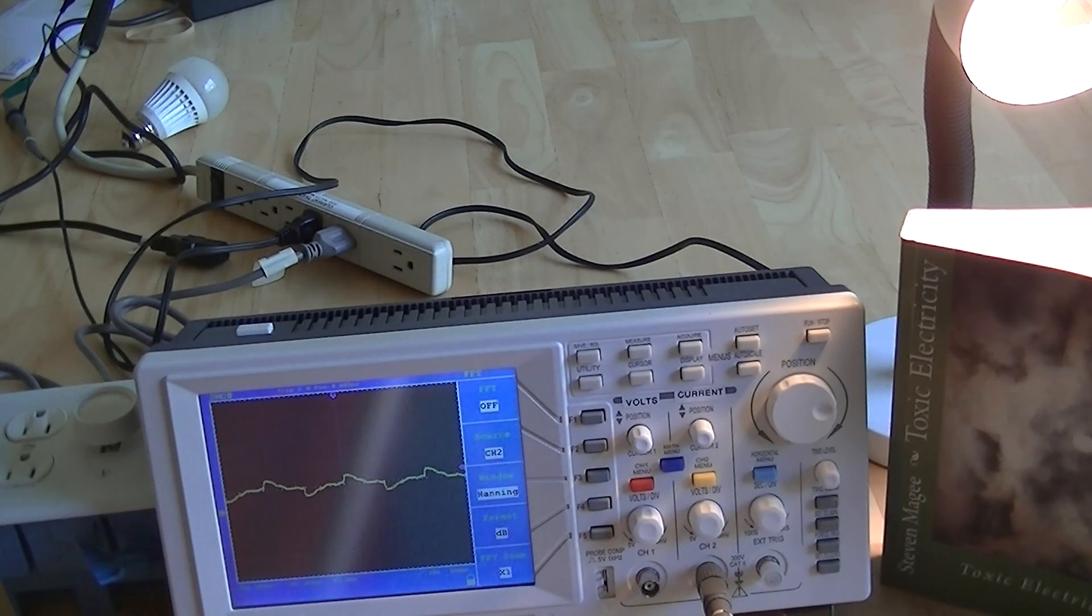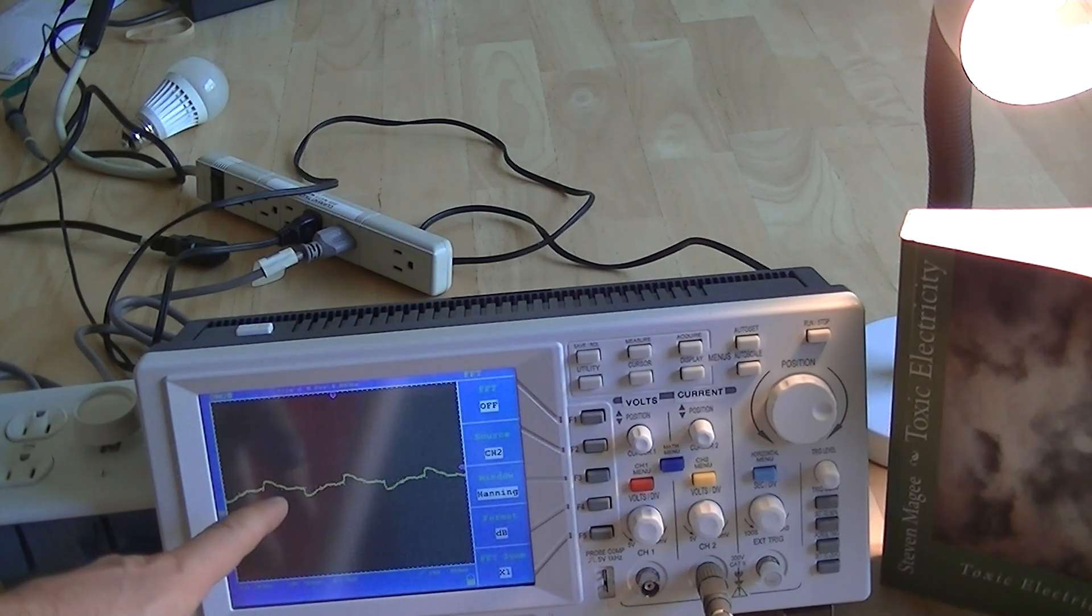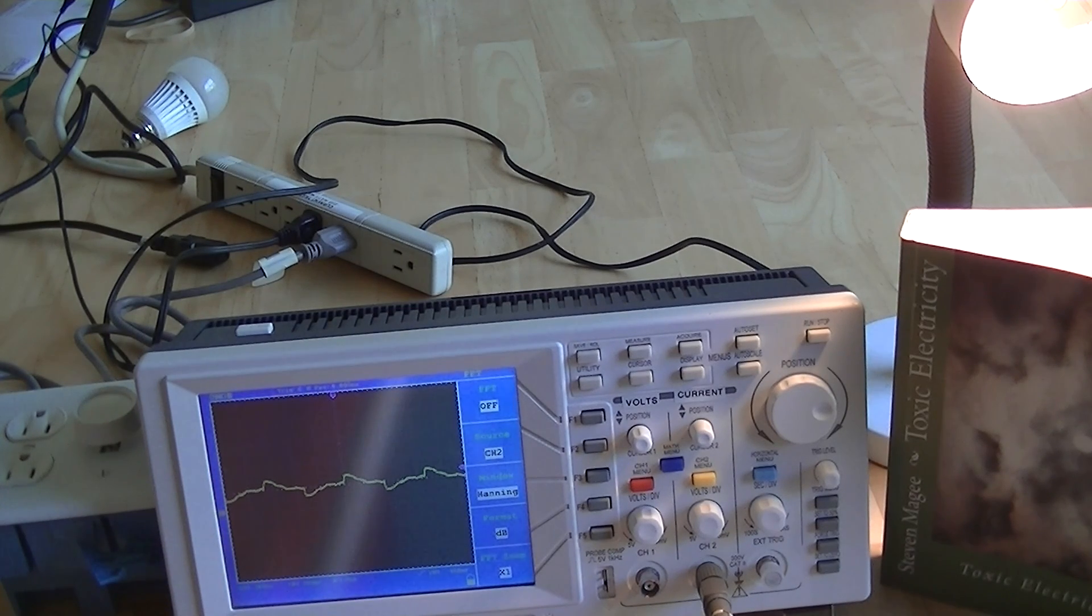So this particular LED light bulb is connected to the main system right now. We actually have the oscilloscope recording the current waveform going out to that light bulb and as you can see it's highly distorted. So that causes harmonics.